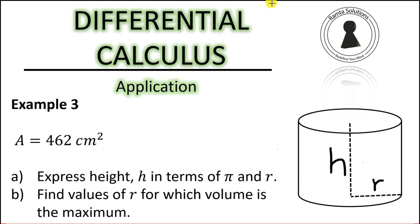Hello guys, welcome to Ram Tell Solutions. Today we're looking at the last video on differentiation — calculus optimization. The example says: given that the area is 462, the first question is to express height h in terms of pi and r, which is the radius. Then part b asks to find the values of r for which the volume is a maximum. To find the maximum volume, you need to find the derivative of the volume.